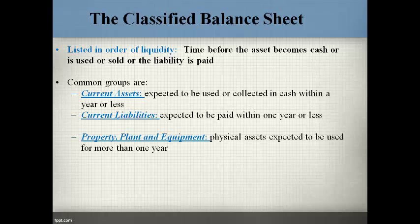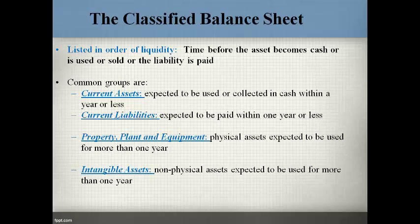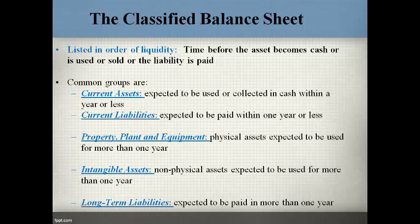Property, plant, and equipment consists of physical assets that are expected to be used to operate the business for more than one year. Intangible assets are non-physical assets expected to be used for more than one year. Long-term liabilities are expected to be paid in more than one year. Current means within one year, and non-current or long-term means more than one year.